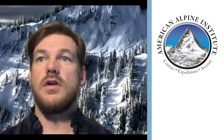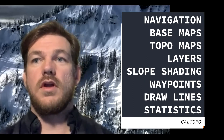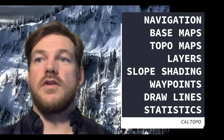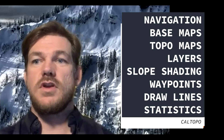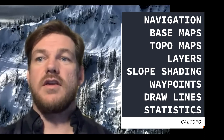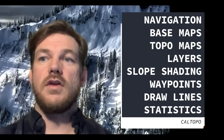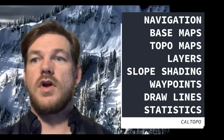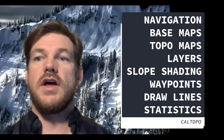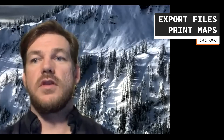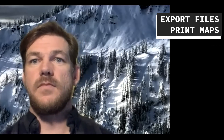Hi all, this is Jason Speer from the American Alpine Institute. I'm a Splitboard Guide and Avalanche instructor. Today we're going to talk about CalTOPO: how to navigate to a known area, base maps, and an introduction to topo maps in general. We'll talk about how to add layers, slope angle shading and how it relates to avalanche problems, dropping a waypoint, drawing a line, line statistics, exporting to a GPX file, and printing the map for use in the field.